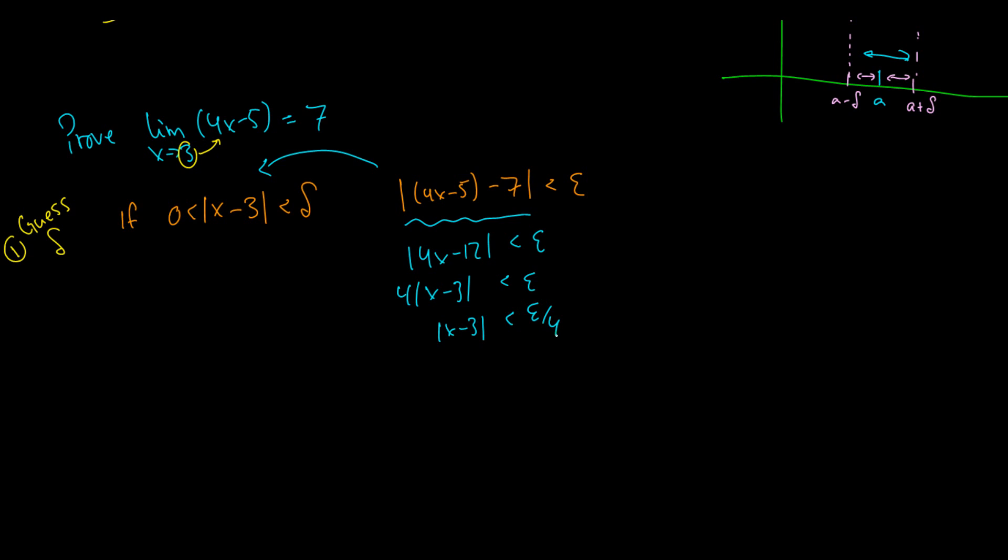So now we know that the absolute value of x minus 3 is less than delta, and the absolute value of x minus 3 is less than epsilon over 4. So what we're going to do is we're going to pick delta equal to epsilon over 4.